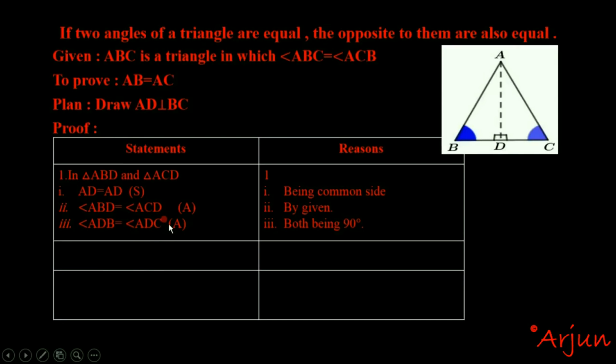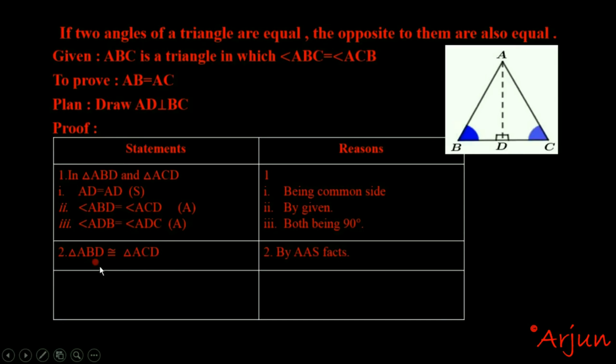By AAS, triangle ABD is congruent to triangle ACD, with the reason being the AAS criterion.